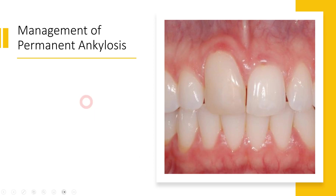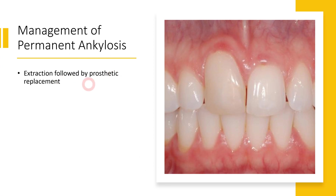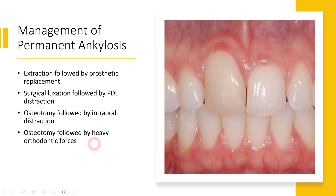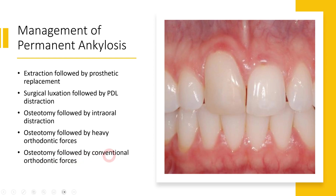For management of a permanently ankylosed tooth, we can go for extraction and replacement with prosthetic options: dental implants, removable partial denture, or fixed partial denture. Other available treatments include surgical luxation followed by PDL distraction, osteotomy followed by intraoral distraction, osteotomy using heavy orthodontic forces, and osteotomy followed by conventional orthodontic forces. Out of these five options, extraction followed by prosthetic replacement is the most commonly preferred, as it is straightforward and less demanding for the patient.